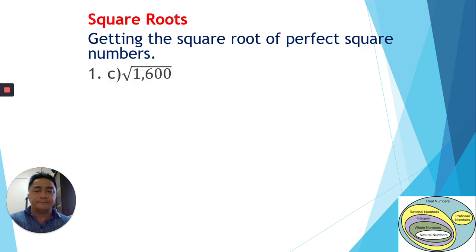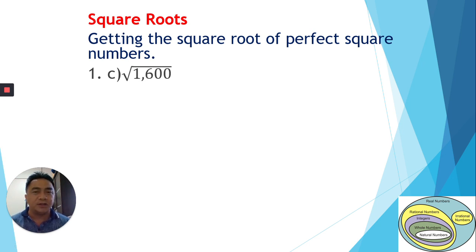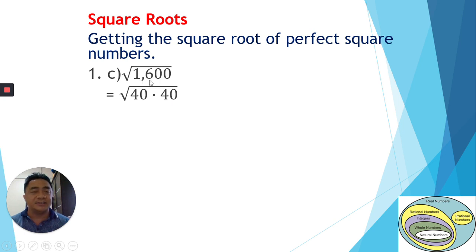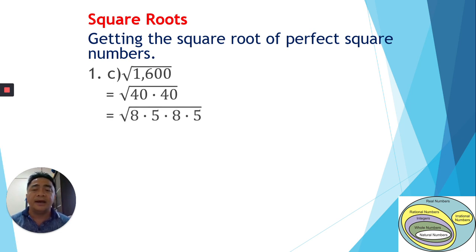The next example is the square root of 1600. Notice this contains 16 — and 4 times 4 gives 16. For 1600 we use 40 times 40, since 40² = 1600. Now 40 is not a perfect square by itself, so we reduce it: 40 = 8 times 5.